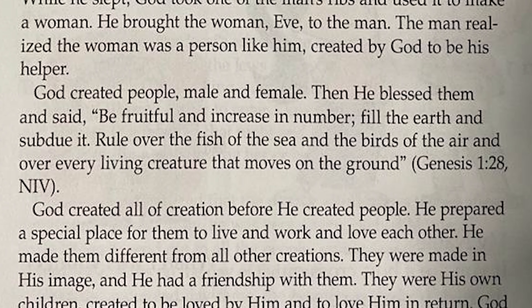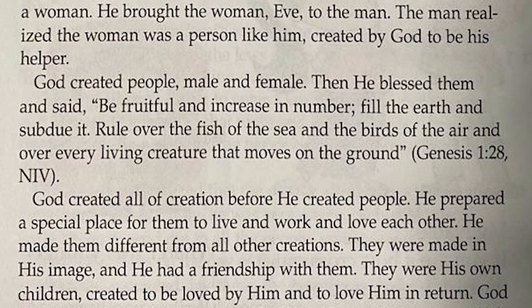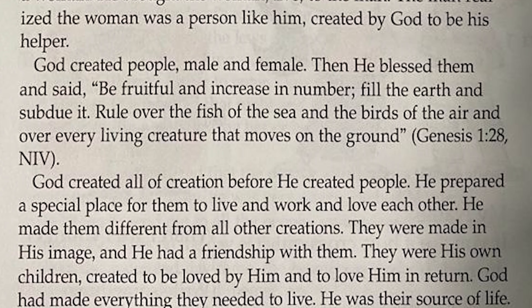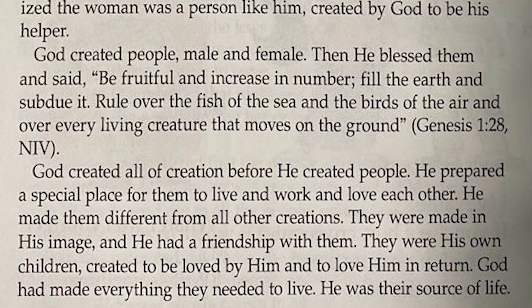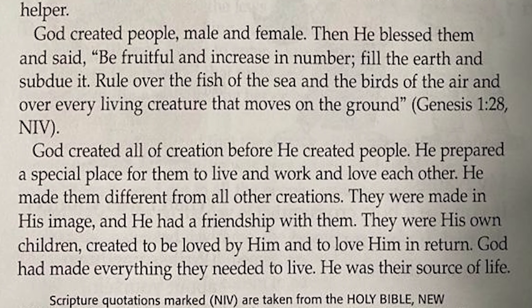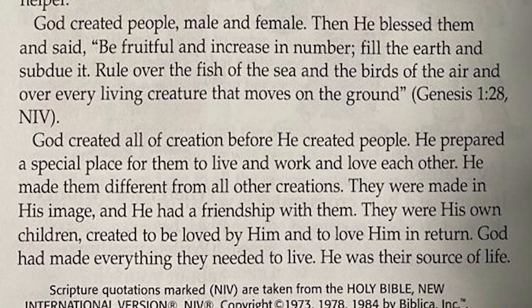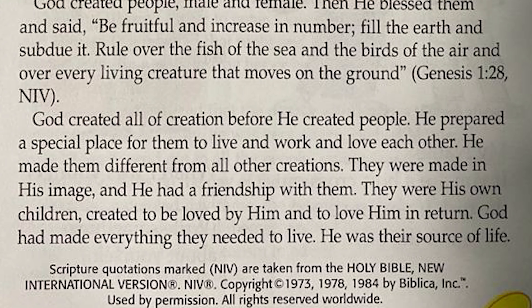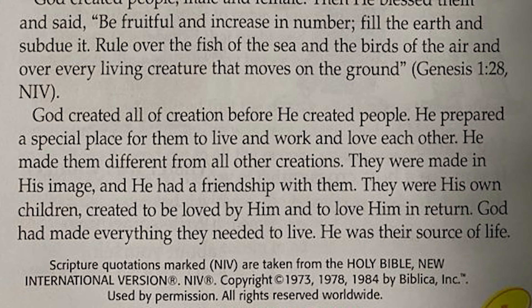God created all of creation before He created people. He prepared a special place for them to live and work and love each other. He made them different from all other creations — they were made in His image and He had a friendship with them. They were His own children, created to be loved by Him and to love Him in return. God had made everything they needed to live. He was their source of life. God created everyone to be in His image — that includes you and me. He is our source of life.